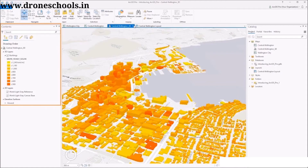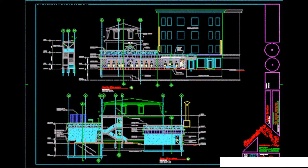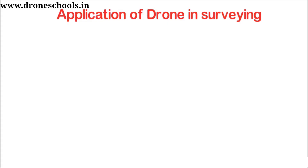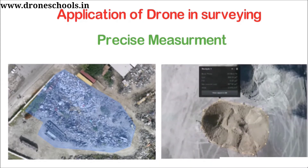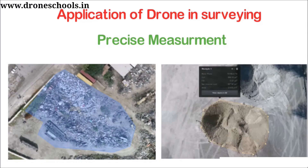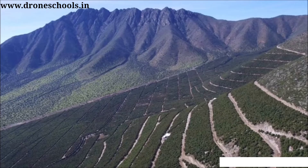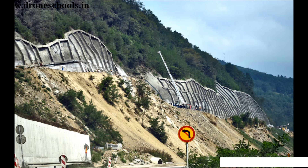High-resolution orthophotos enable surveyors to perform highly accurate distance, surface, and volume measurements. This is a fast and inexpensive method of volume measurement, particularly useful to calculate stock in mines and quarries for inventory purposes. With automated GIS analysis, it is also possible to extract slope measurements from drone imagery. Knowing the stiffness of the ground surface, the area can be classified and used for slope monitoring purposes like landslide mitigation and prevention.